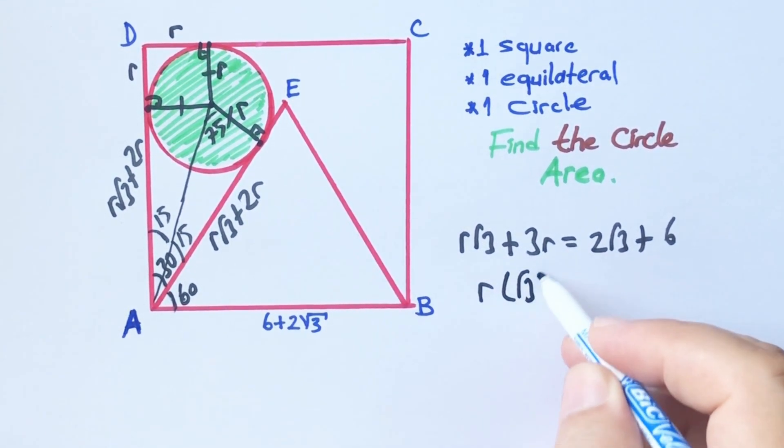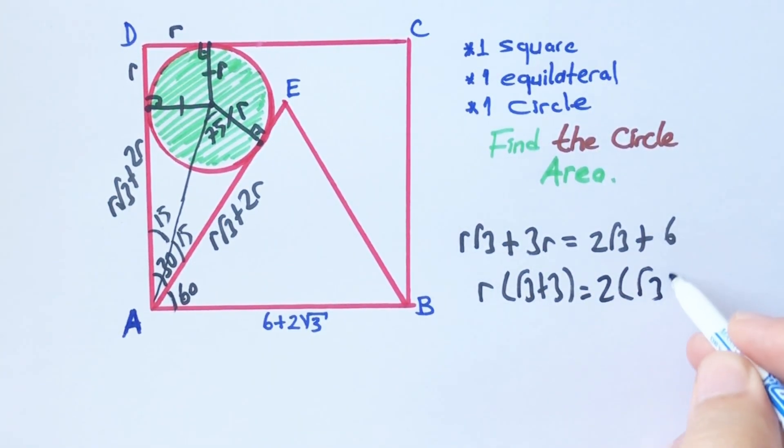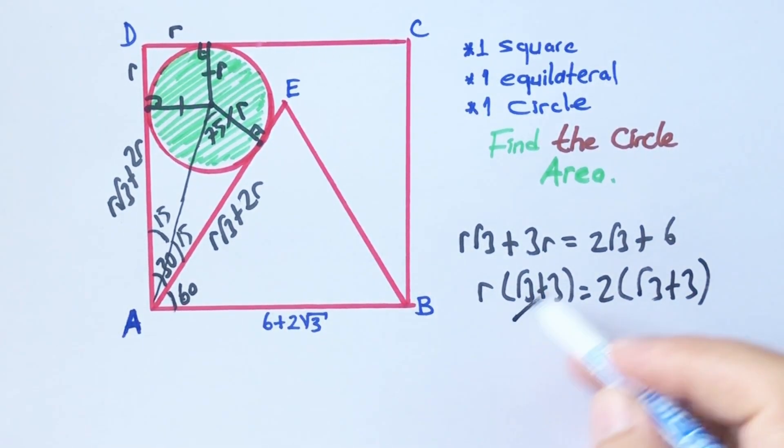Let's factor the left side with r and the right side with 2. These cancel out.